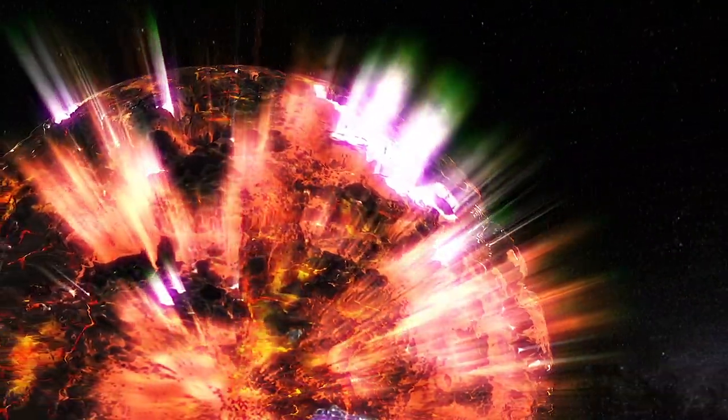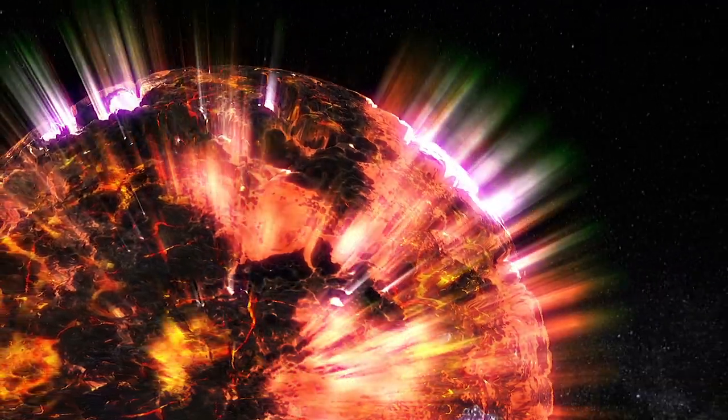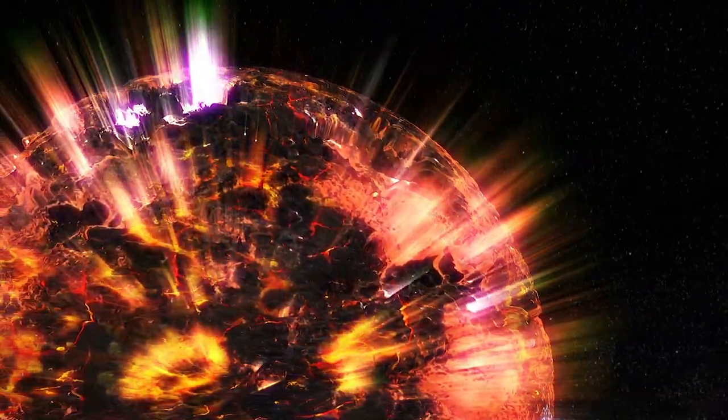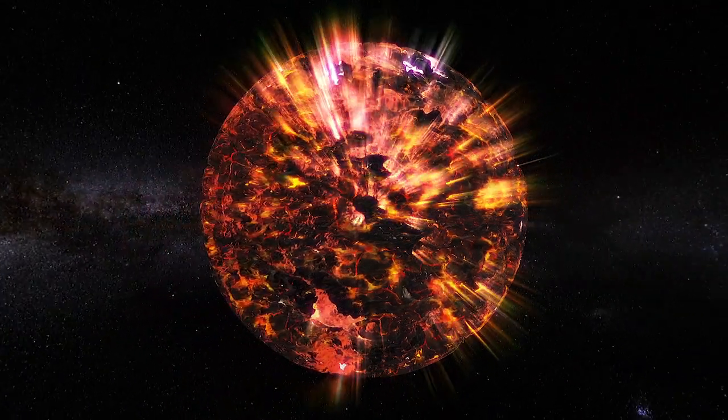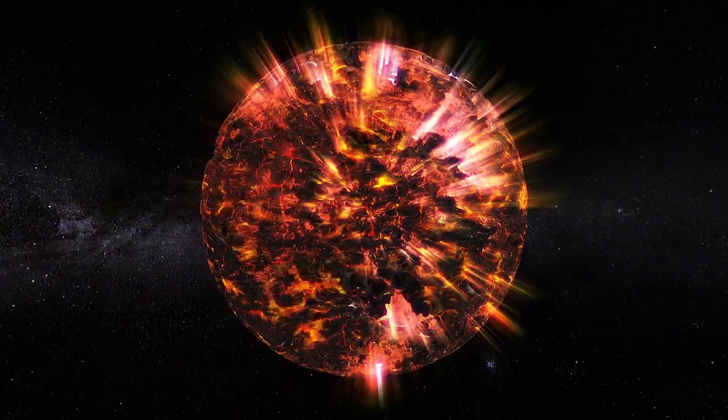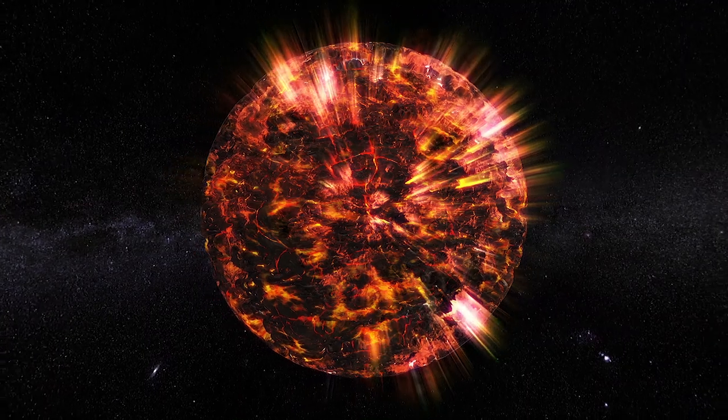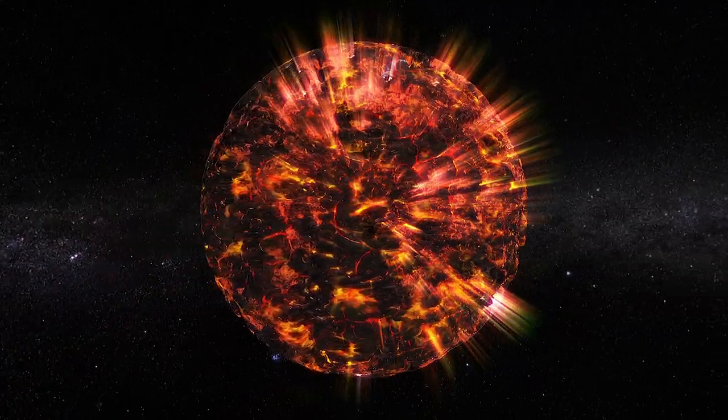Neutron stars form when a massive star runs out of fuel and collapses. They are basically the collapsed, burnt-out cores of dead stars. When a star between one and three times the mass of the Sun dies in a catastrophic supernova explosion, the remaining core becomes a neutron star.